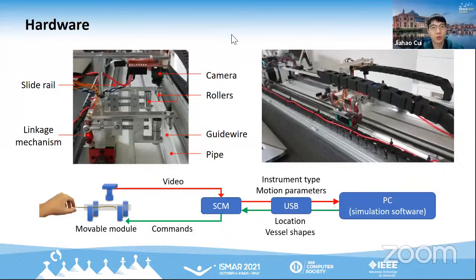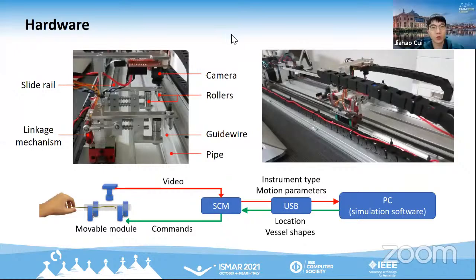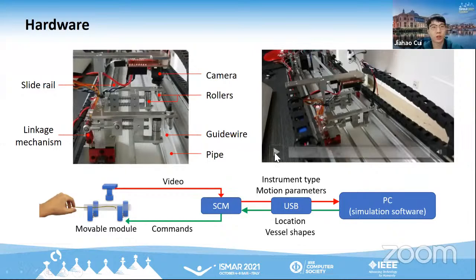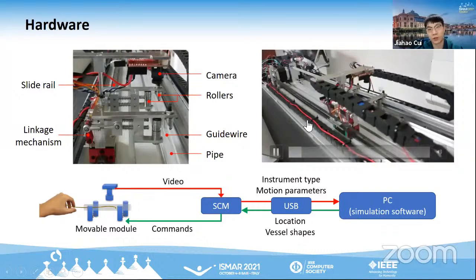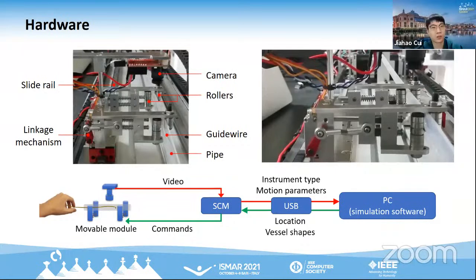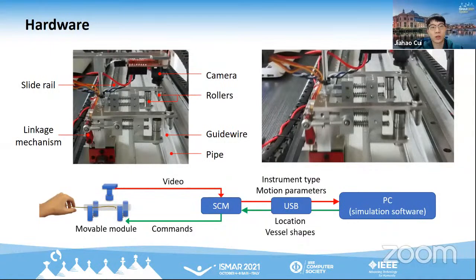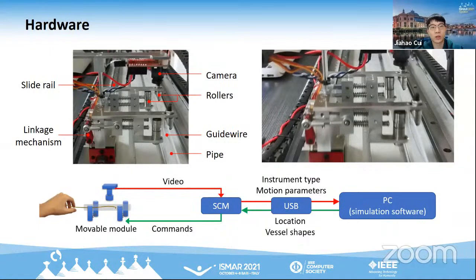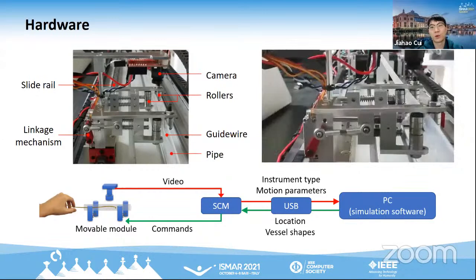We designed and developed tracking and haptic feedback hardware that includes a movable module running on slide rails, consisting of a camera and two pairs of rollers. Linkage mechanisms drive the rollers to change the shape of a pipe to simulate vessels. When users manipulate a guidewire in the pipe, the camera obtains movement in real-time by capturing video. The instrument type and motion parameters — positions, velocities, and acceleration — are computed by the microcontroller and transmitted to our simulation software.